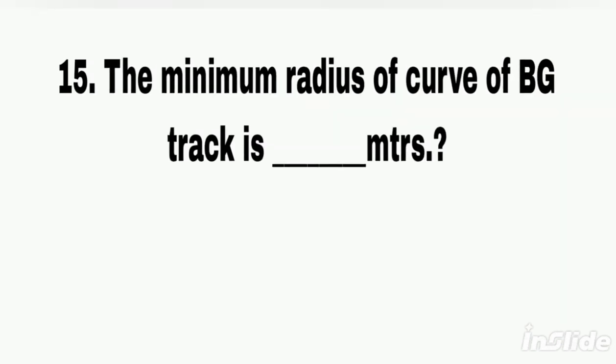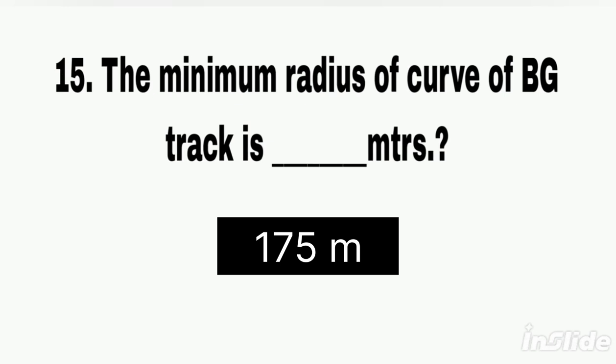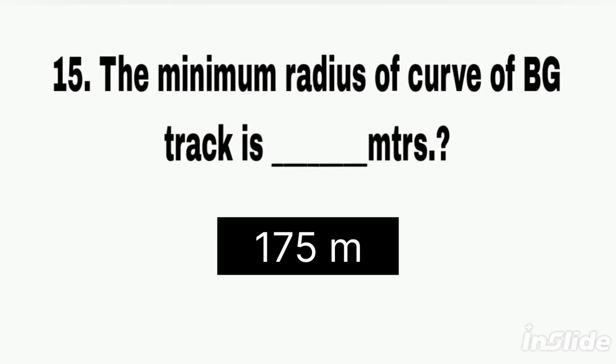Q15. The minimum radius of curve of broad gauge track is how many meters? Answer: 175 meters.